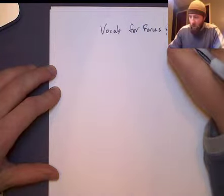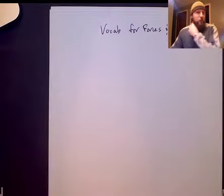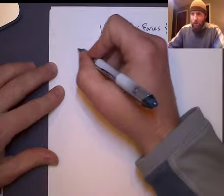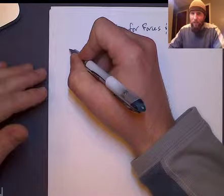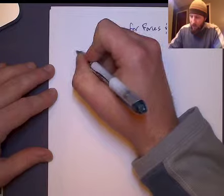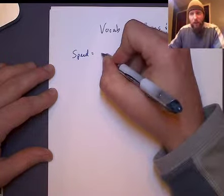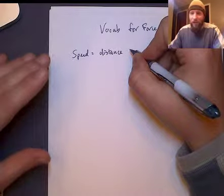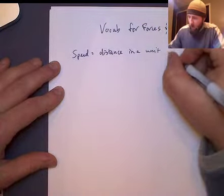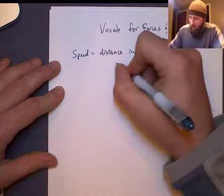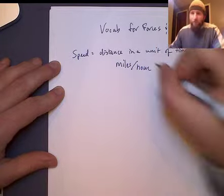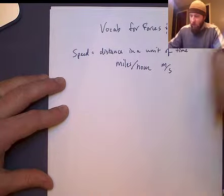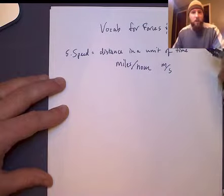First words, velocity. Based on what you've seen in class, I'm actually going to start with the fifth word, which is speed. Speed is defined as distance in a given period of time. For example, miles per hour or meters per second would be a speed. That's number five.